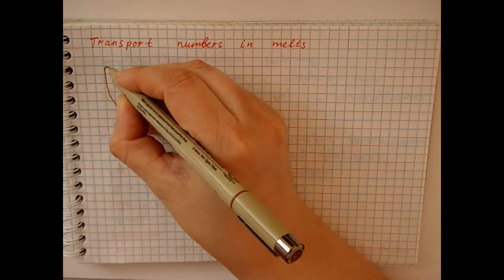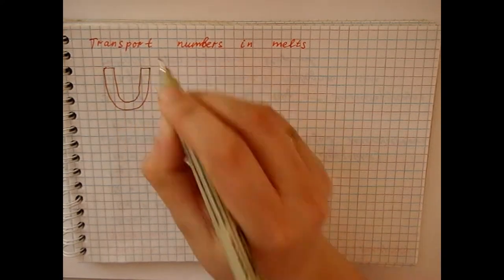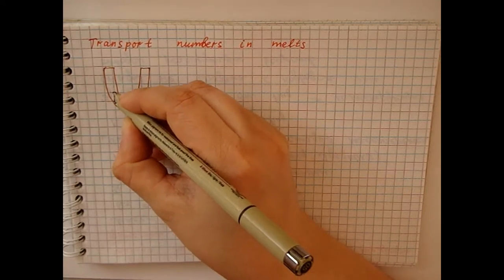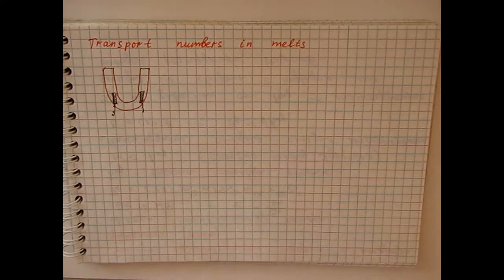Suppose that a U-shaped tube contains molten salt and two metal electrodes: cathode and anode.